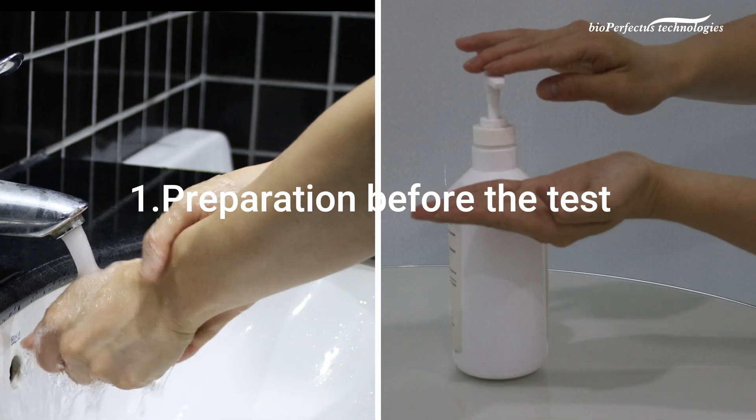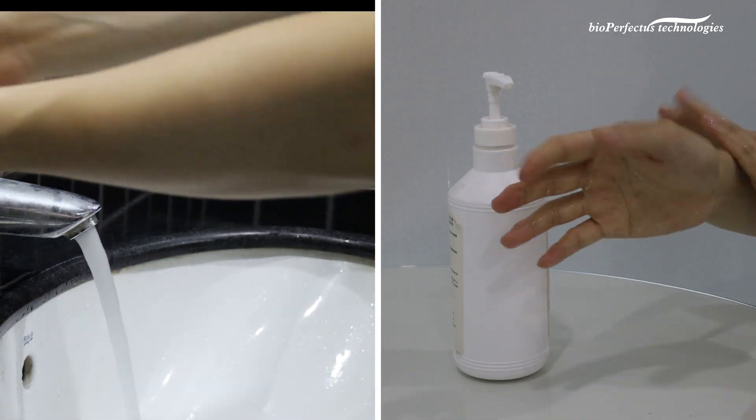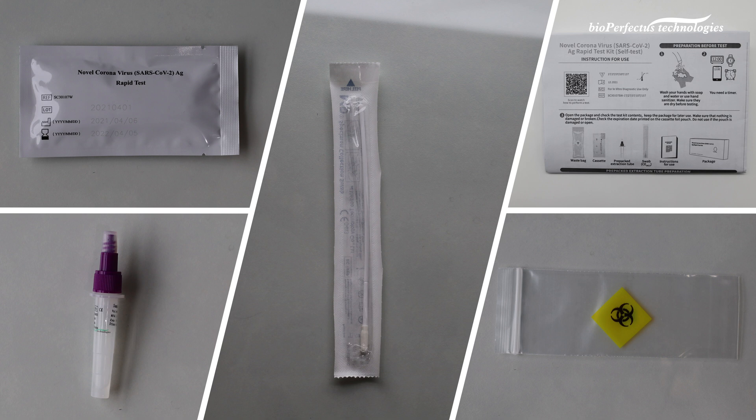Step 1: Preparation before the test. Wash your hands thoroughly with soap and warm water, or use hand sanitizers. Bioperfectus SARS-CoV-2 antigen rapid self-test kit includes five items. They are cassette,